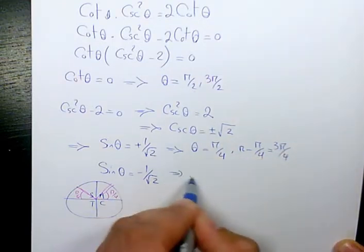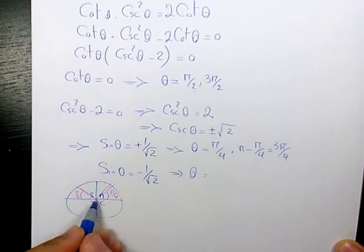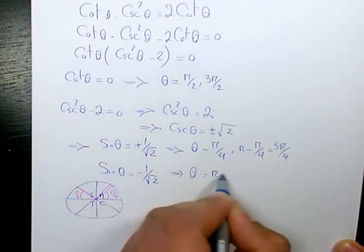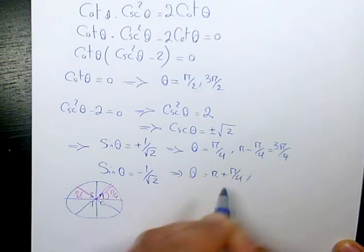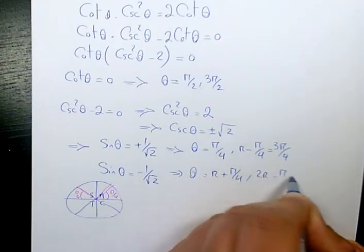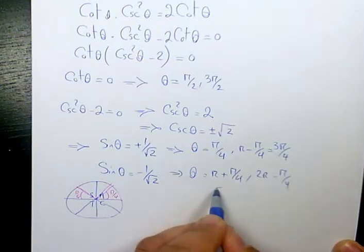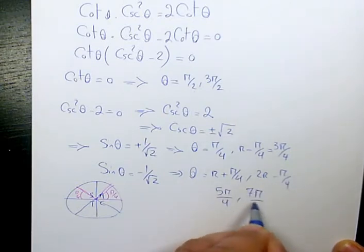And here, theta will be in quadrant 3 and quadrant 4. It's going to be pi plus pi over 4 and 2 pi minus pi over 4. So we should have 5 pi over 4 and 7 pi over 4.